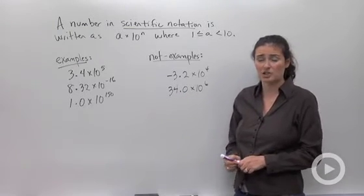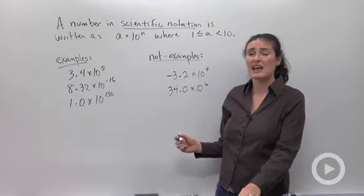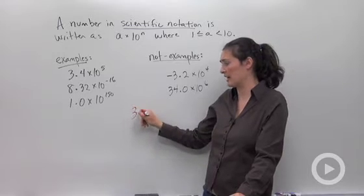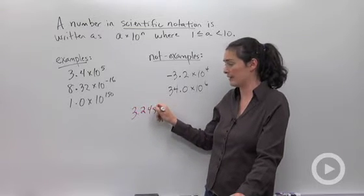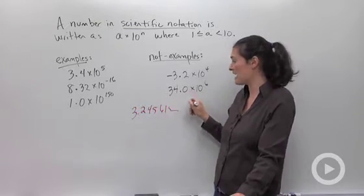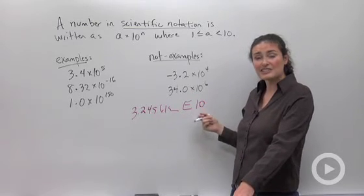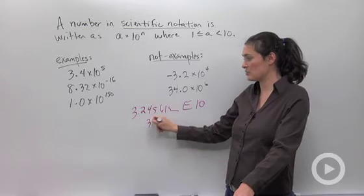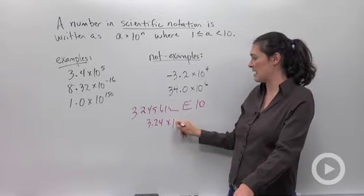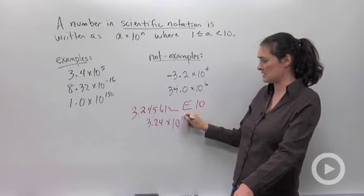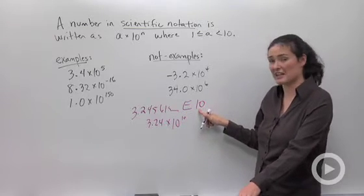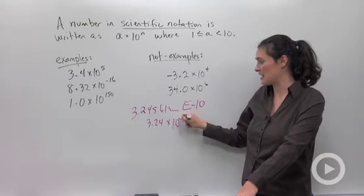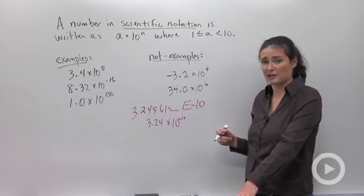One last thing I want to point out to you before you start doing these problems is what this looks like on your calculator. Have you ever typed something into your calculator and you get like 3.2, 4, 5, 6, 1, blah, blah, blah, e, 10? That's your calculator telling you scientific notation. What that means is 3.2, 4, blah, blah, blah, times 10 to the tenth exponent. This little number that comes after the e is the exponent on your 10. It might be positive, it might be negative, something like that. That's what it looks like on your calculator.